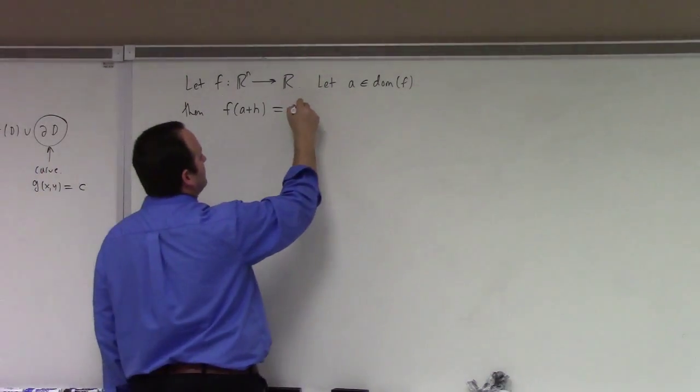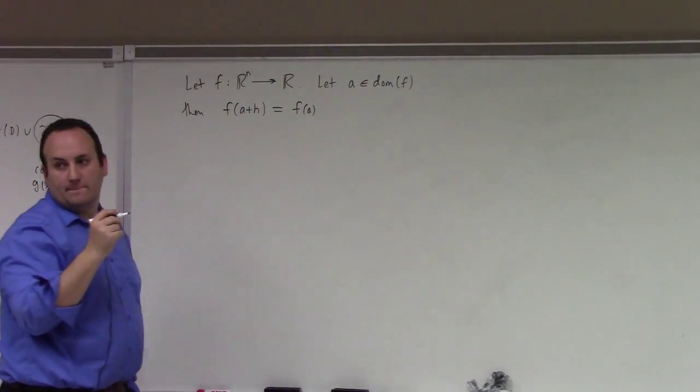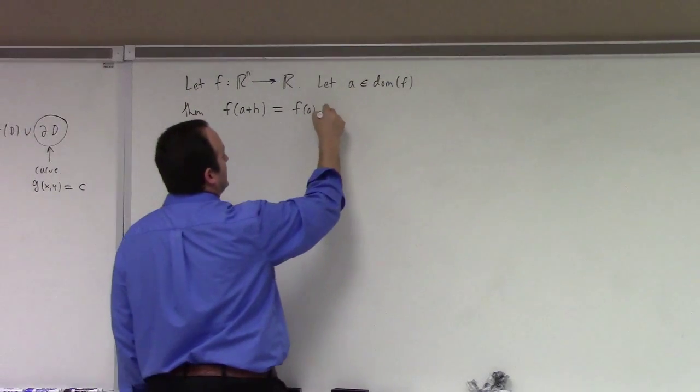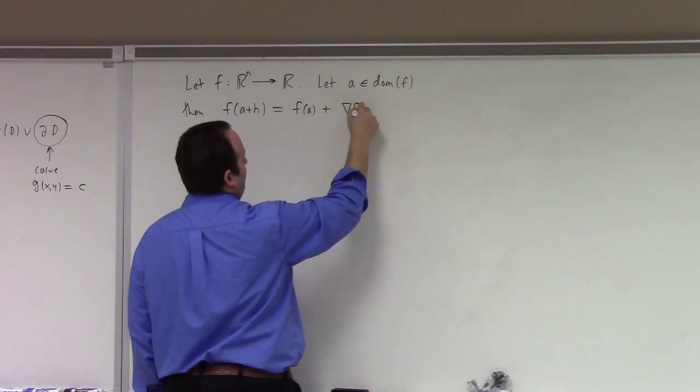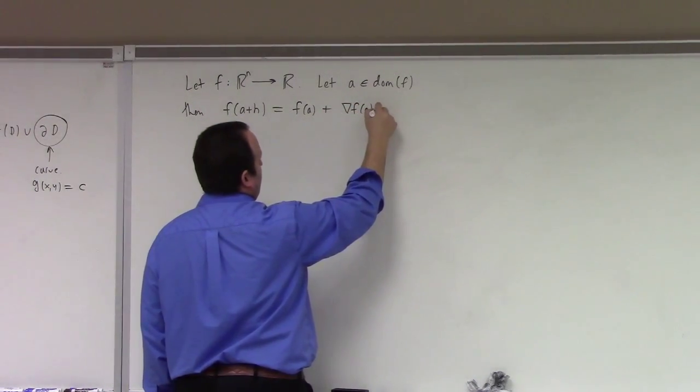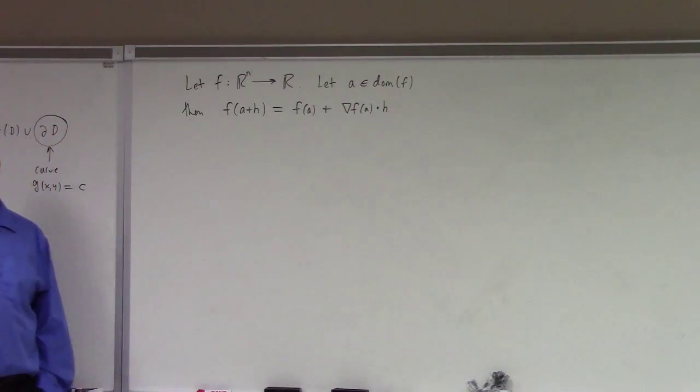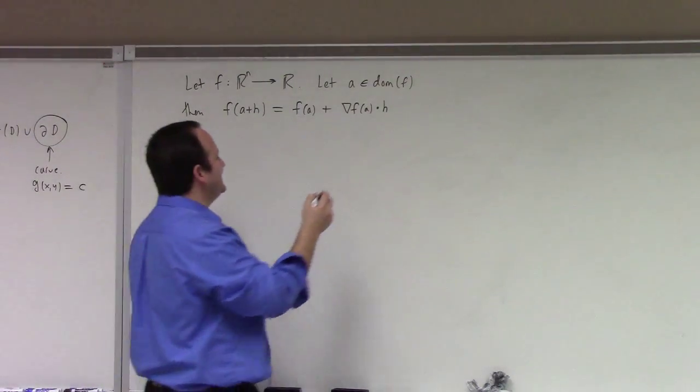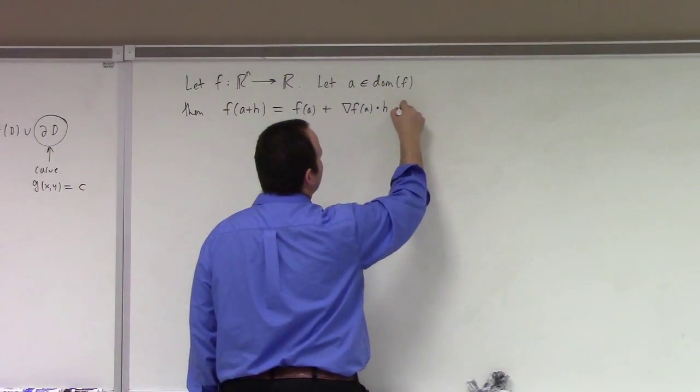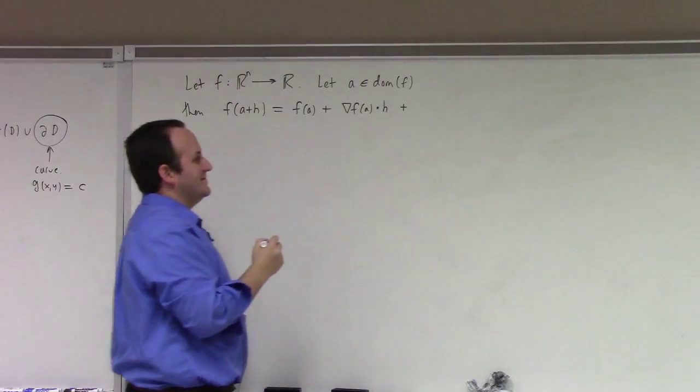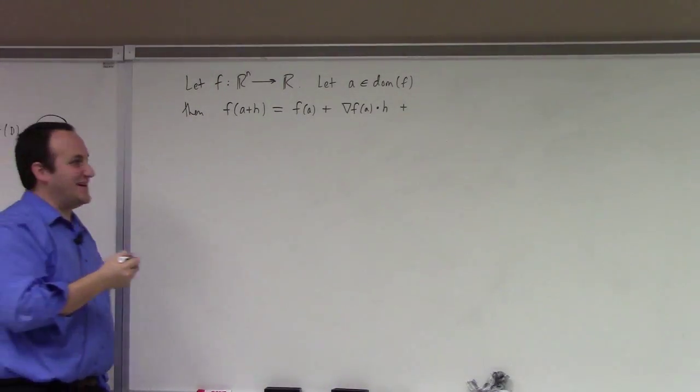F of A, right? F of A plus what? F of A plus the gradient of F at the point A dotted with H. F of A plus what? F of A plus the error term, right? What's the next thing?